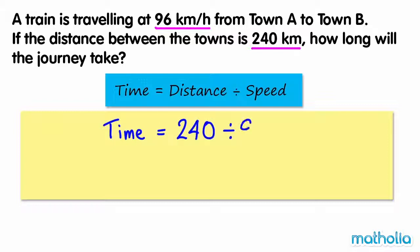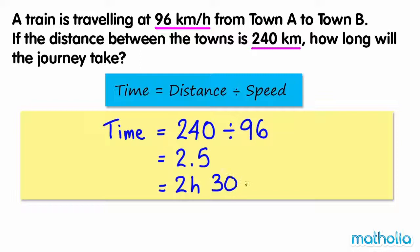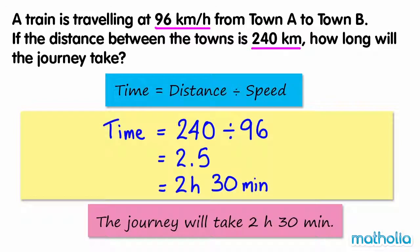240 divided by 96 equals 2.5. Our time units are hours. 2.5 hours is equal to 2 hours and 30 minutes, so the journey will take 2 hours and 30 minutes.